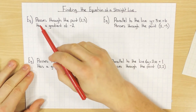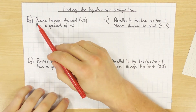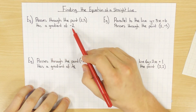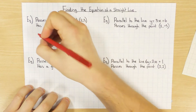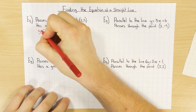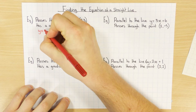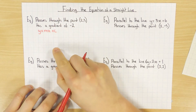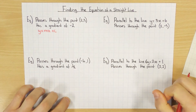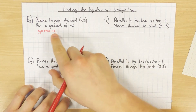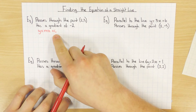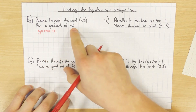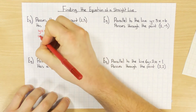So the first one here, I want to work out the equation of a line that passes through the point (2, 3) and has a gradient of minus 2. So hopefully from the first video you remember that the general equation of a straight line is y equals mx plus c, where m is the gradient and c is where the line crosses the y-axis. The gradient is minus 2, so that's easy, let's put that in.